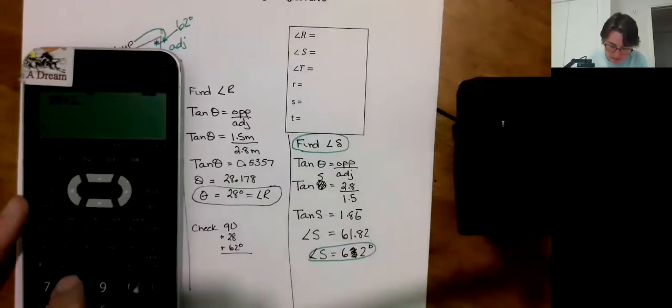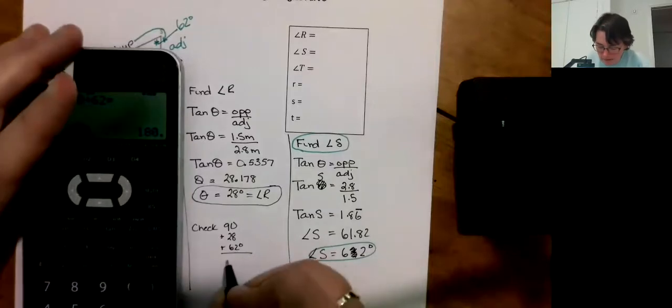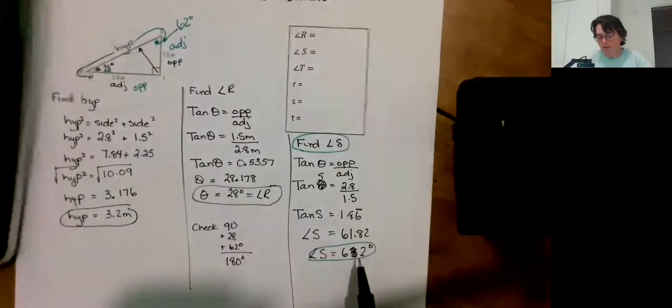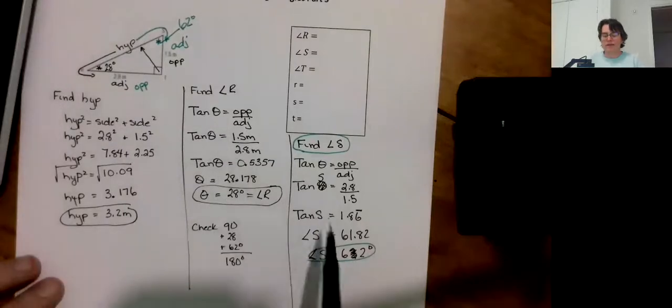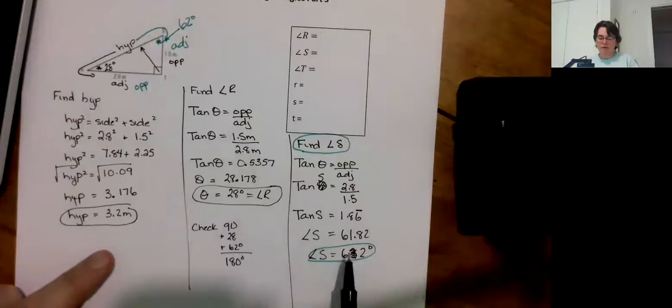We're going to do it. We'll do it here. So we got the 90 degrees there. Plus the 28 degrees from there. Plus the 62 degrees here. Pretty sure that's going to work out. Well, let's check. Plus 62. 180 degrees. See, that's the point of doing it using your tan function. If I made a mistake here or here when I added this up, I would catch that mistake.